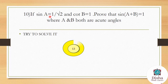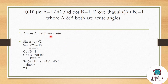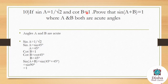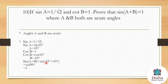Given sin A = 1/√2 and cot B = 1, prove that sin(A+B) = 1, where A and B are acute angles. From the trigonometric table, sin 45° = 1/√2, so A = 45°. Also cot 45° = 1, so B = 45°. Therefore sin(A+B) = sin(45°+45°) = sin 90° = 1. Hence proved.